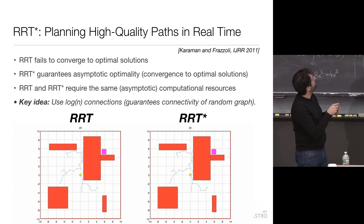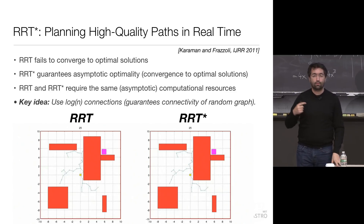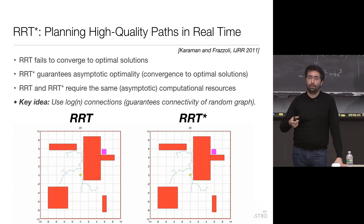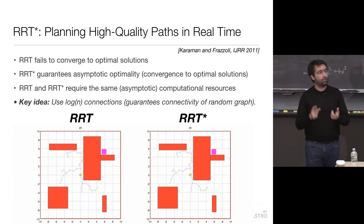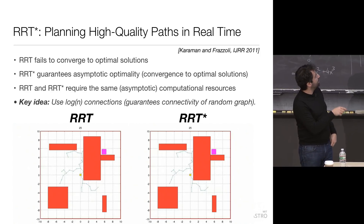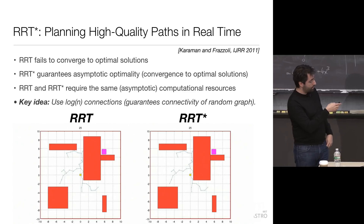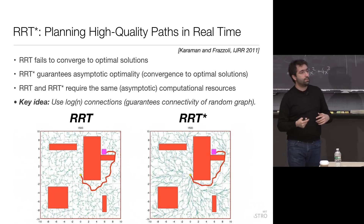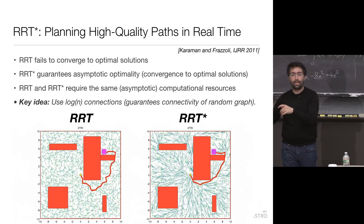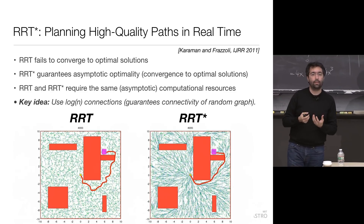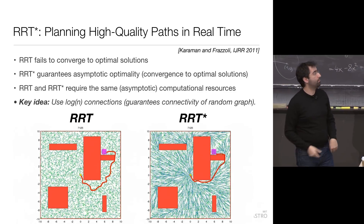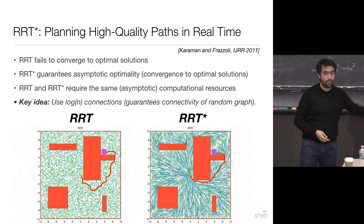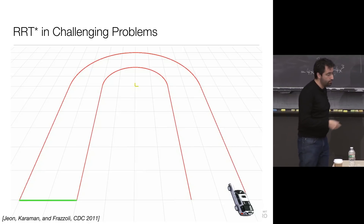We came up with another algorithm we called RRT*, which does a little bit more work but guarantees asymptotic optimality — meaning it will always converge to optimal solutions. The computational difference between the two is very little. If you run them side by side, the RRT* tree just looks at paths locally and corrects them locally just a little bit. That small correction is enough to converge to globally optimal trajectories. That turned out to be my doctoral thesis in 2011.